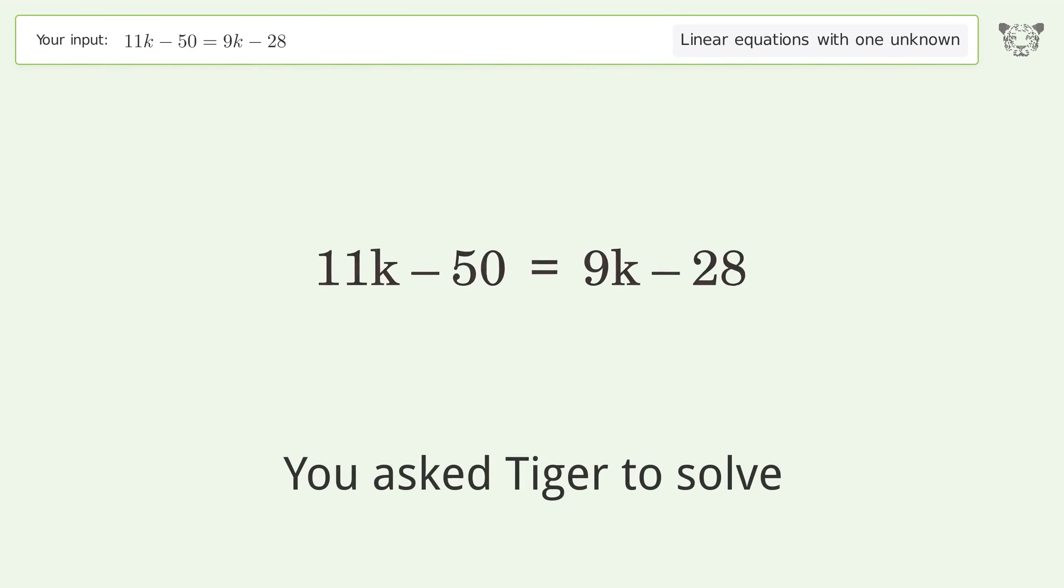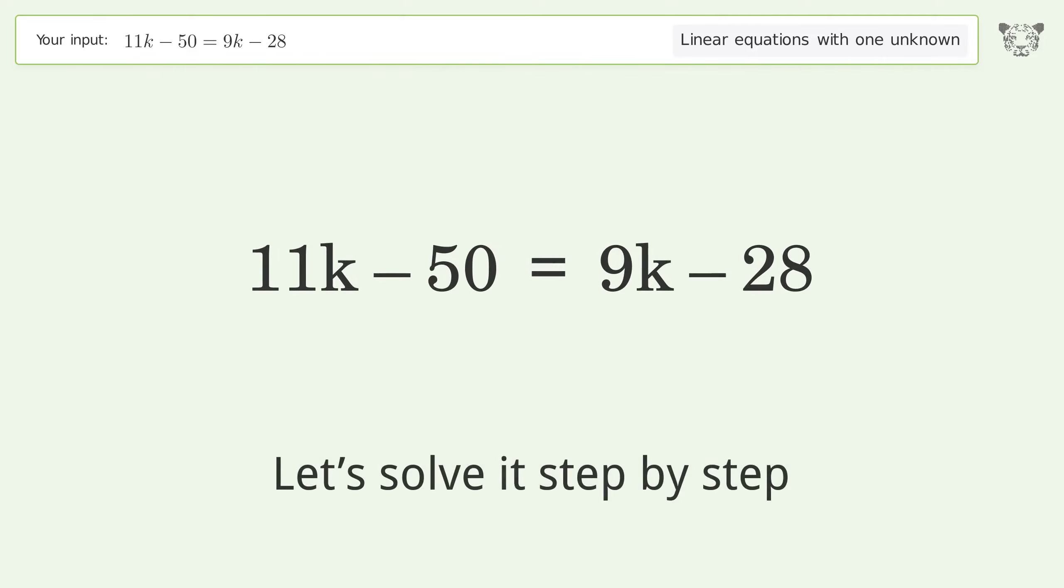You asked Tiger to solve. This deals with linear equations with one unknown. The final result is k equals 11. Let's solve it step by step.